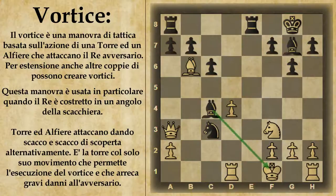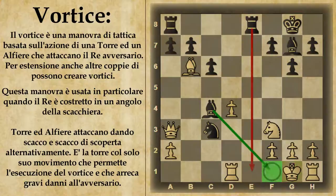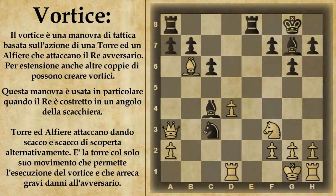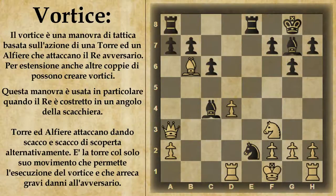Byrne non gli è parso il vero di poter catturare la donna avversaria, ma purtroppo è caduto in una trappola e Fischer ha potuto giocare questo vortice. Si comincia con alfiere per c4 che dà scacco. In questo caso il vortice è un po' diverso, perché il re bianco non può giungere in e1 in quanto c'è la torre nera che lo impedisce: quindi il re potrà oscillare tra le case f1 e g1. Il bianco poteva frapporre la torre, ma in quel caso avrebbe semplicemente perso il pezzo. Supponiamo che giochi re g1: viene giocato cavallo e2, che dà scacco, e poi appena il bianco fa l'unica mossa, darà uno scacco di scoperta, ad esempio cavallo per d4.